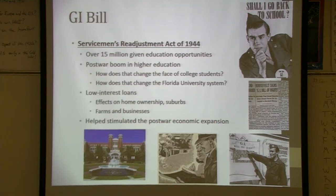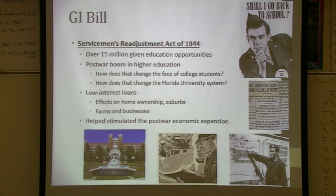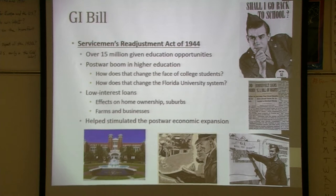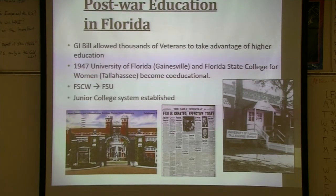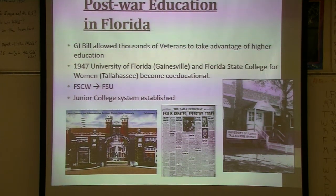The second part of the GI Bill was that it also gave low-interest loans to veterans. They could use it for a home, a business, or their farms. This is going to have an effect on so many other aspects — we're going to have the suburbs, and businesses and franchises that come about. This is definitely probably in the top 10 greatest bills in US history. For Florida, in 1947 this is where we changed, and the junior college system was also added.